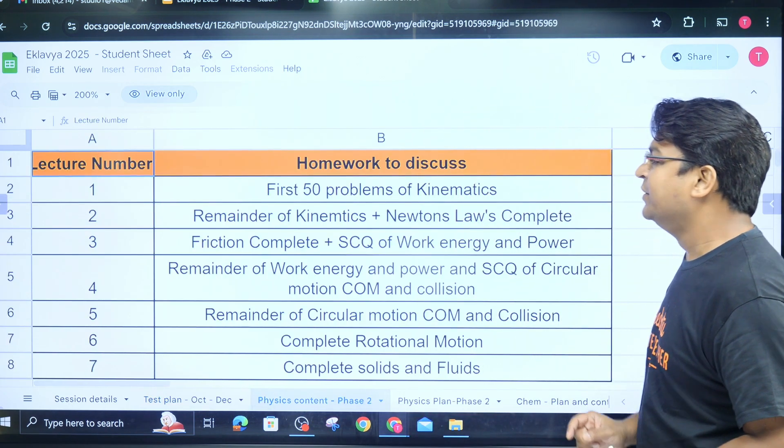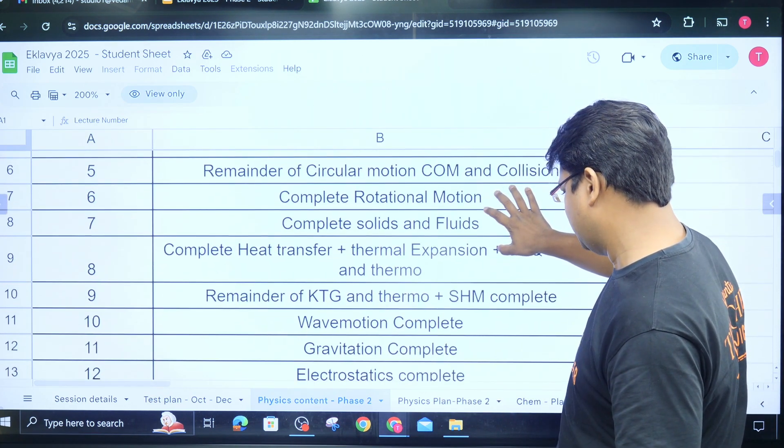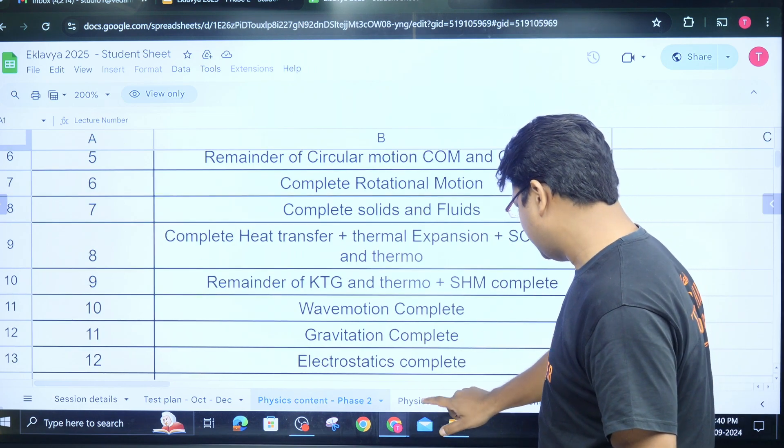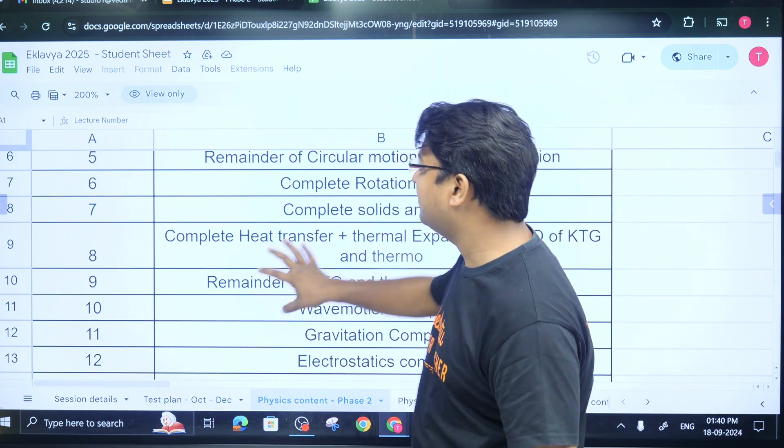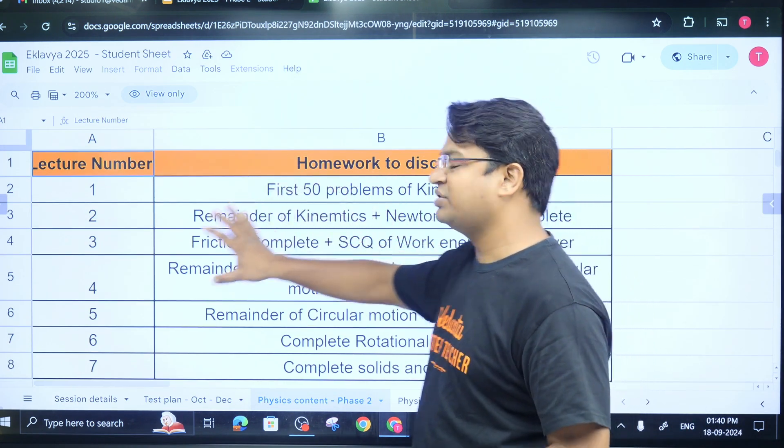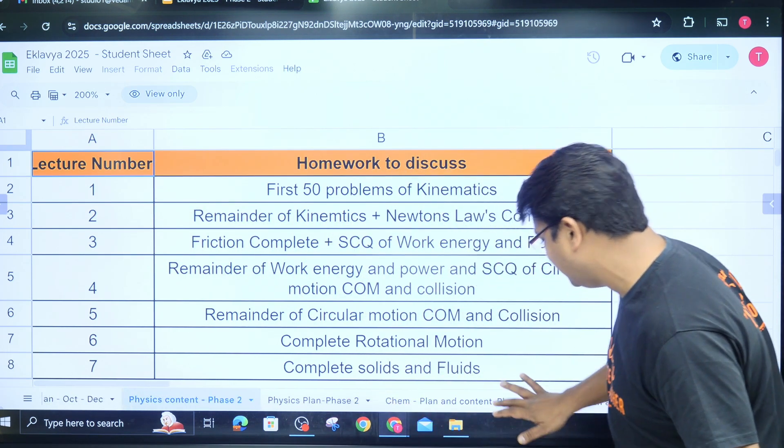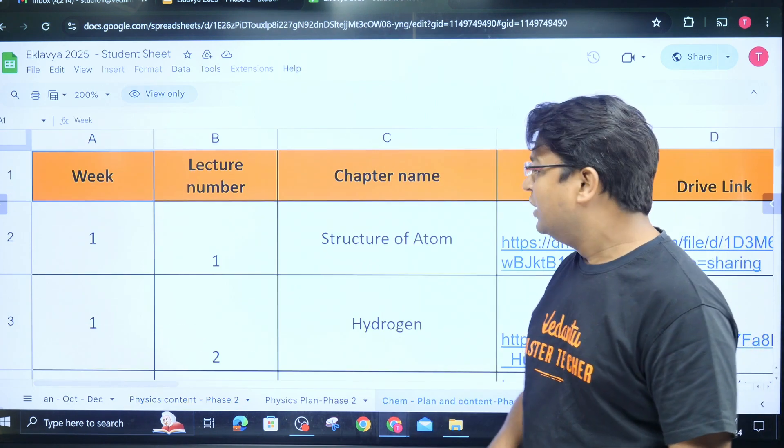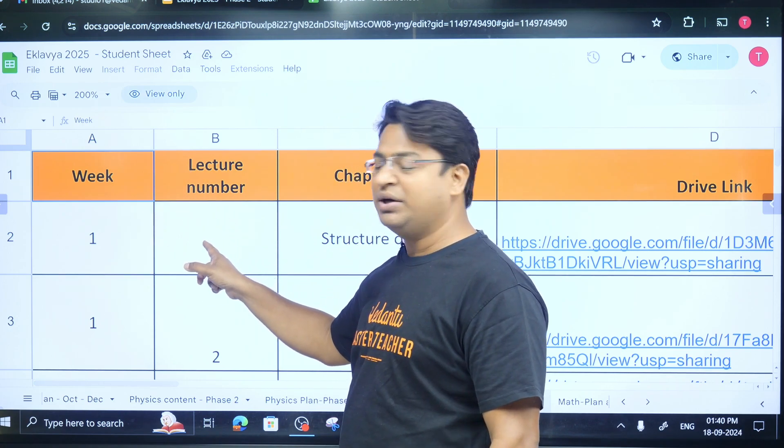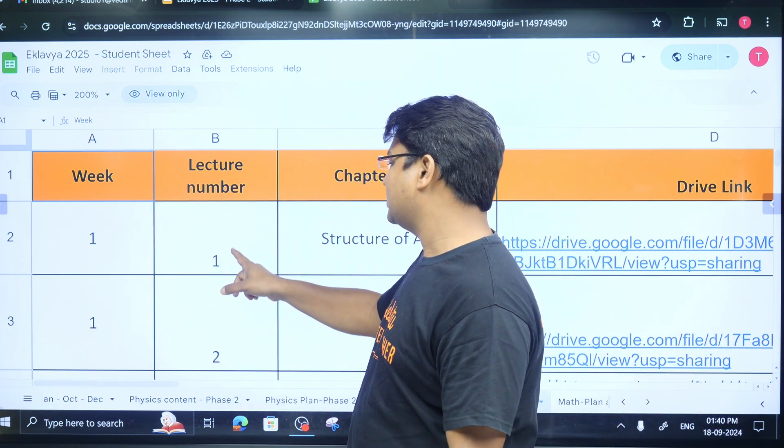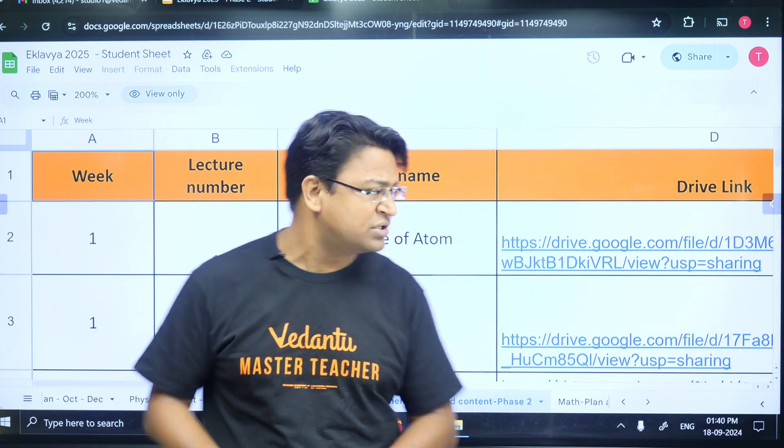Now comes the question: what are we going to do exactly in Phase 2? So schedule is fine, test plan is fine, but what are we going to do? Let me show you the physics content. While preparing the sheet I think I might have committed a small mistake. Let me start with chemistry, then you will be able to understand better.